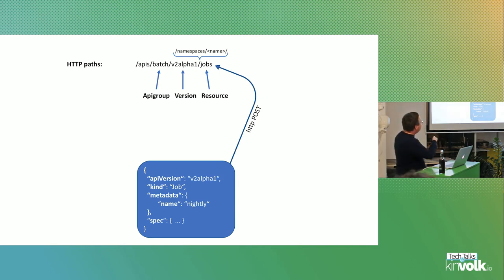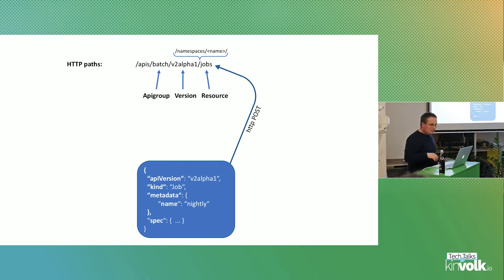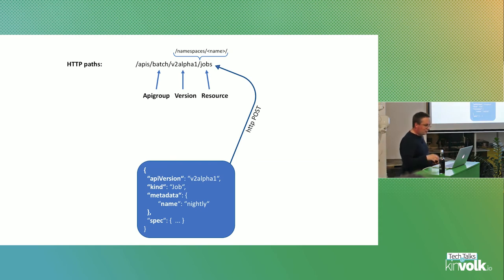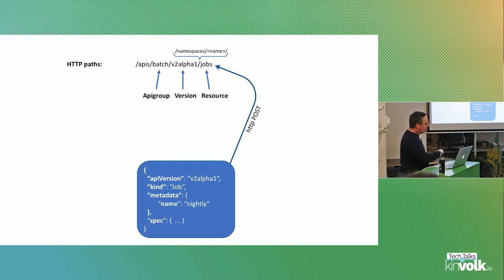A pod is in the core group, v1, and it's 'pods' — by that I know the JSON schema to use. For namespaced resources like jobs, there's a namespace segment in the URL path, so you write '/apis/batch/v2alpha1/namespaces/default/jobs' then the job name. There are also cluster-wide resources which don't have that namespace segment — namespaces themselves don't, because they are not namespaced.